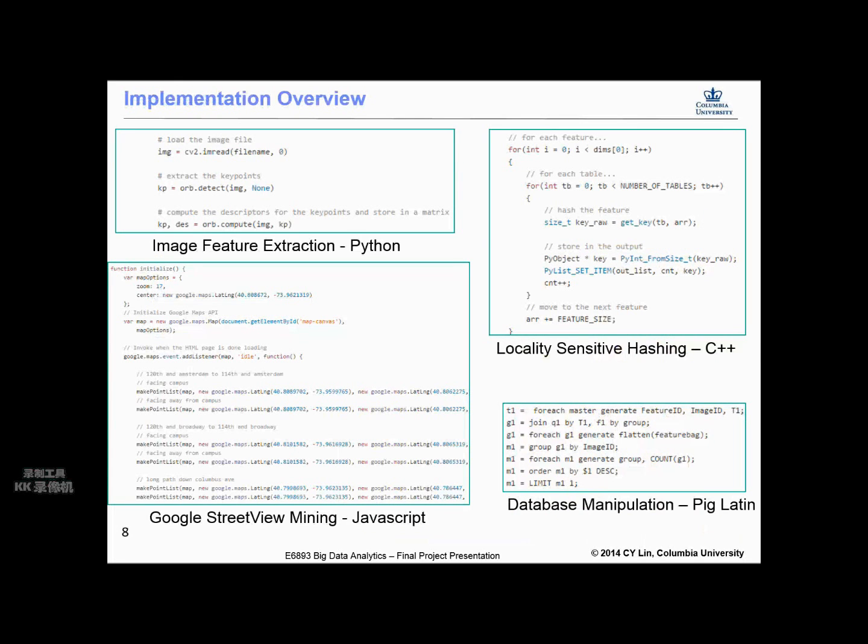In implementing the system, we use several different languages and platforms. First, to mine Google Street View for imagery, we use the Google Maps JavaScript API to interpret points along Street Views in New York City and plotted them as markers in the Google Map. We were then able to export this list of points and construct URLs to query Street View for images at those particular latitude and longitude locations.